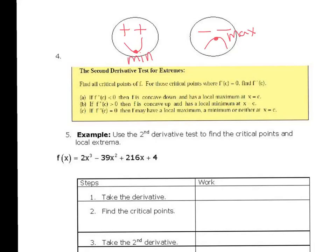And that relates to the second derivative test. Where it says, if f double prime of c is less than zero, then f is concave down and has a local max at x equals c. If f double prime of c is greater than zero, then f is concave up and has a local min at x equals c. So that's what the smiley faces are about. If your second derivative is positive, you have a min. If your second derivative is negative, you have a max. Let's try it out.